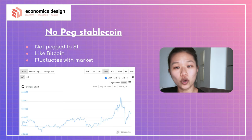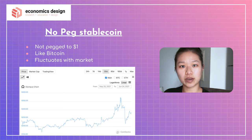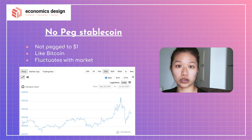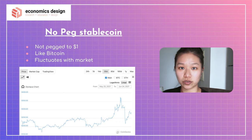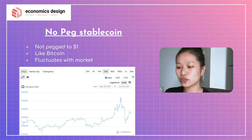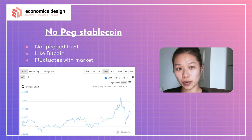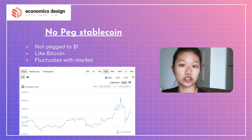The key thing is the no-peg stablecoin. It is not pegged to $1, which is very interesting because all the stablecoins we've talked about are usually pegged to $1. You're pegged to $1 to test if the mechanism works, then you can remove the peg. Here it behaves quite differently — it wants to be like a different Bitcoin where prices are not pegged and can be used as a currency for trading. The prices actually fluctuate just like the market.